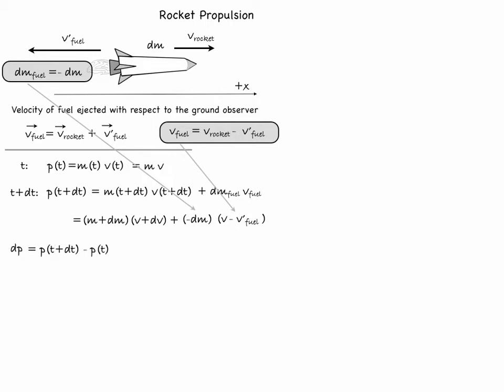The change in the momentum during the short interval dt then will be equal to the momentum at time t plus dt minus the momentum at time t. Opening the parenthesis we get the following terms: mv, m dv, dm v, dm dv, minus dm v, plus dm v'_fuel, minus mv. The mv terms cancel out and so do dm v terms.